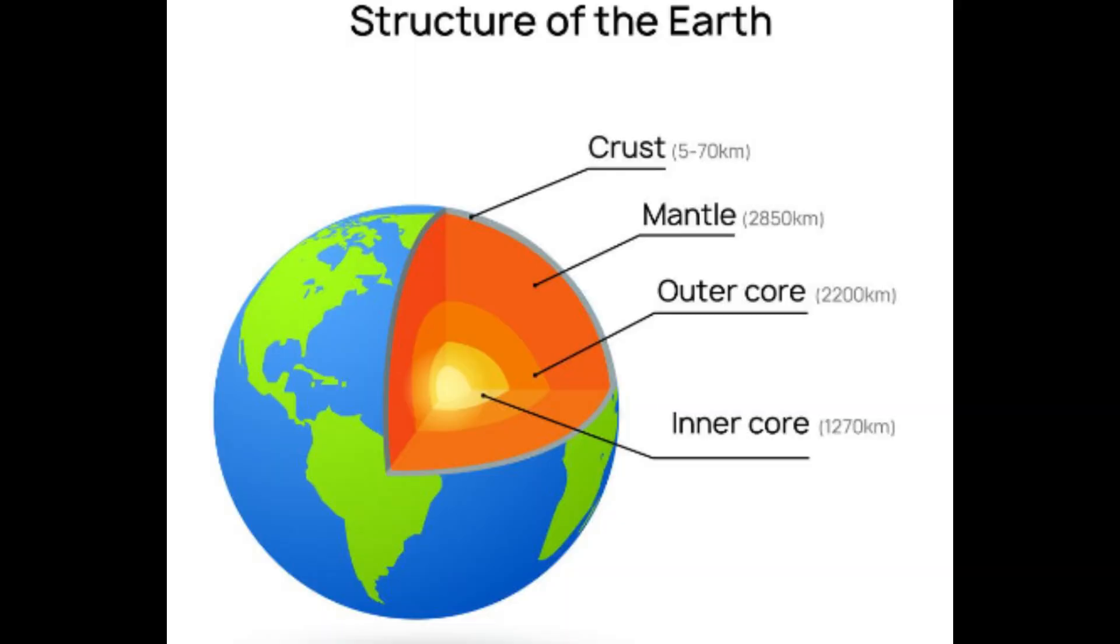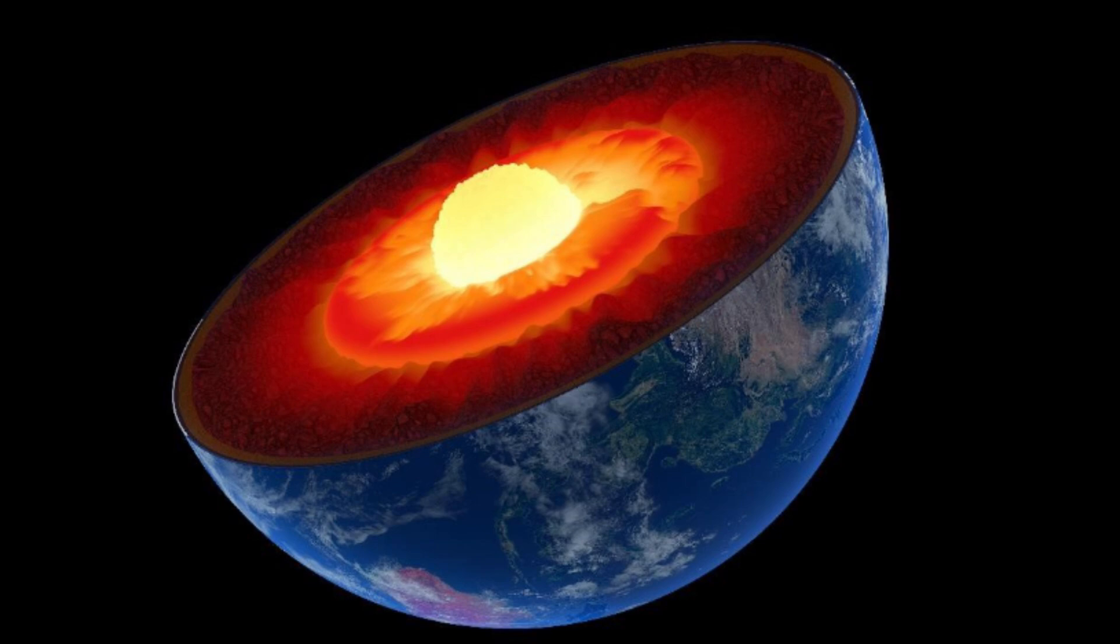Beneath the crust, there's the mantle, a super-hot layer of melted rock called magma. If that magma reaches the surface, it bursts out as lava from a volcano.